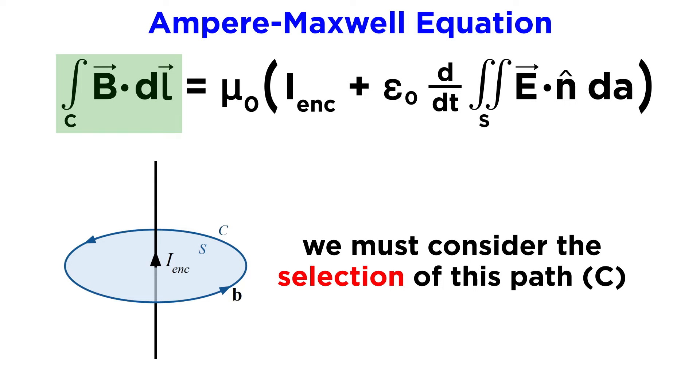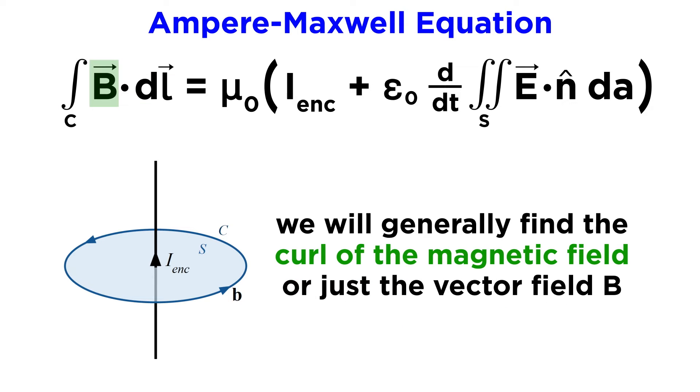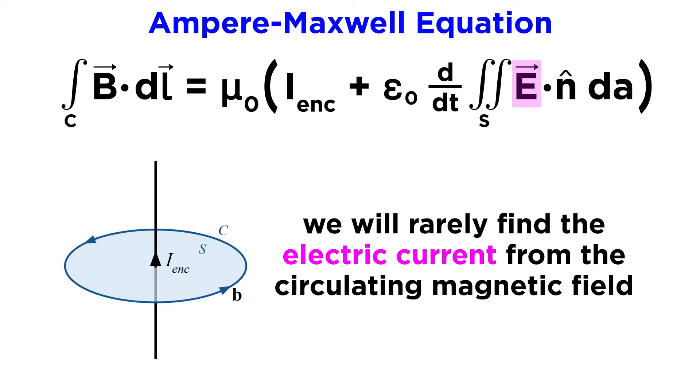In many Ampère-Maxwell problems, the main consideration is the selection of this path. Often called an Ampereian loop, careful consideration that takes advantage of any symmetrical elements within the system can simplify the evaluation of this equation and allow one to determine the generated magnetic field directly. Generally, the equation is used to determine the circulation, or curl, of the magnetic field, or the magnetic field directly from a current, meaning just the vector field B. It is rare to see it used in the other direction to find the electric current from the circulating magnetic field, due to the dynamic nature of the two electrical terms on the right side.